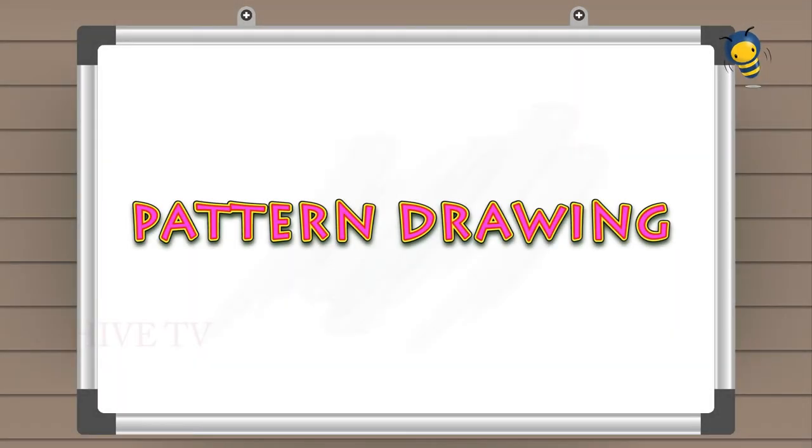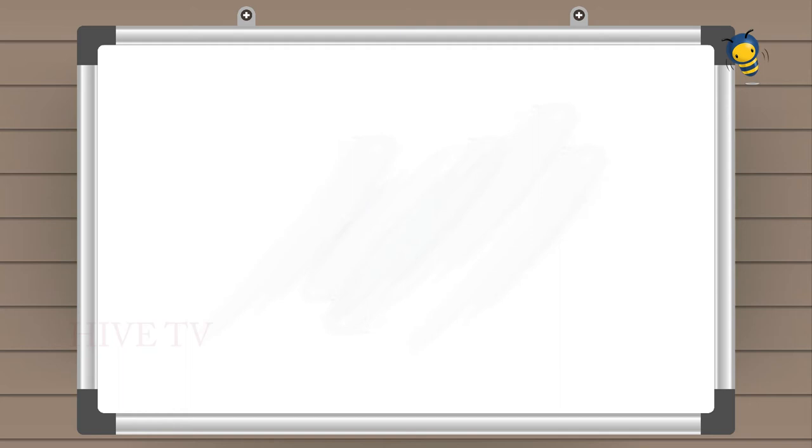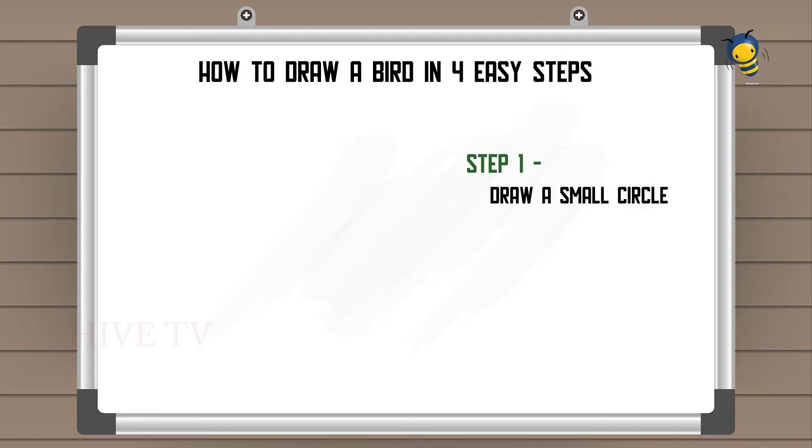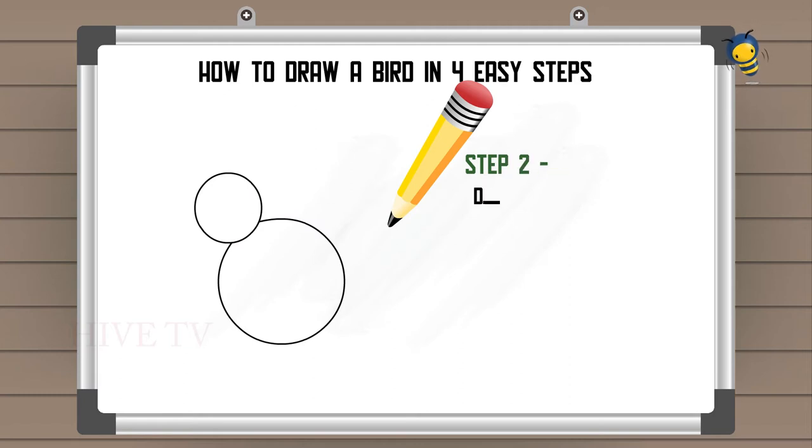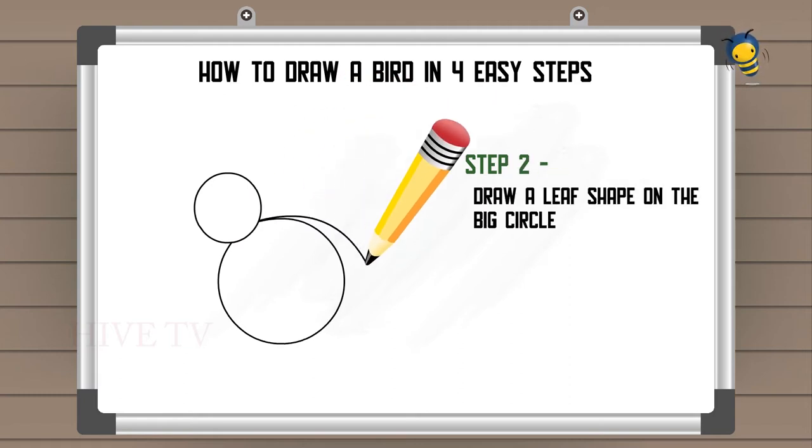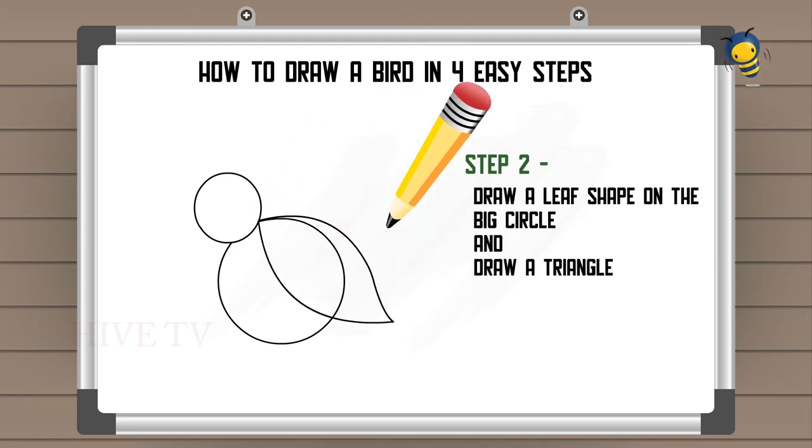Pattern drawing: how to draw a bird in four easy steps. Step 1: draw a small circle and then a big circle. Step 2: draw a leaf shape on the big circle and draw a triangle beside the small circle.